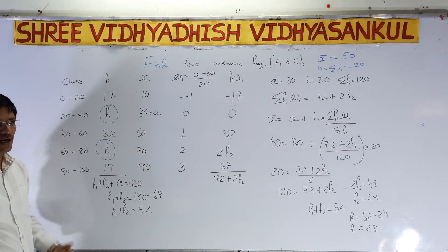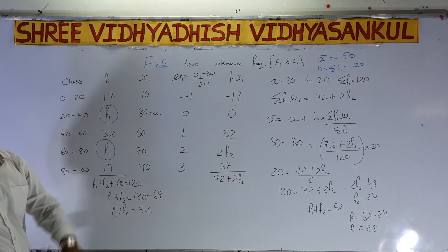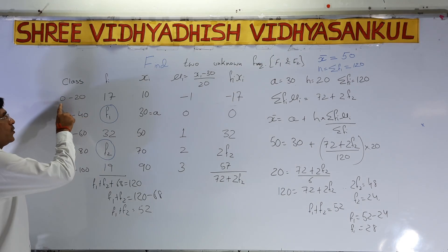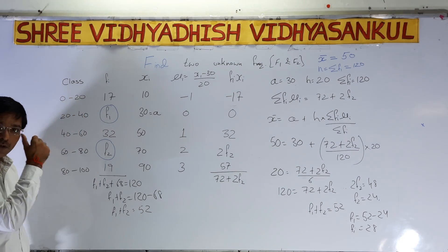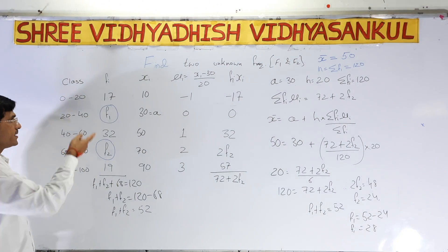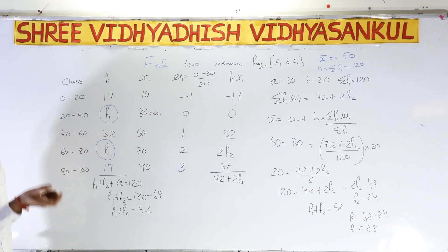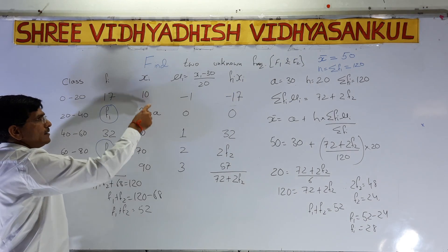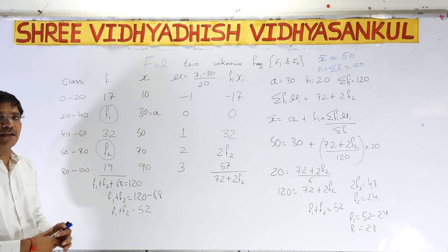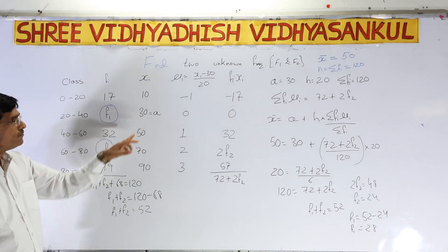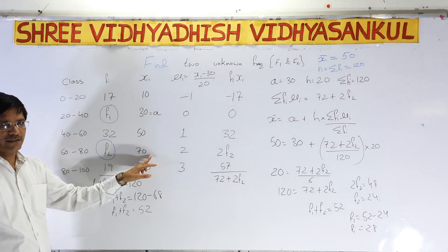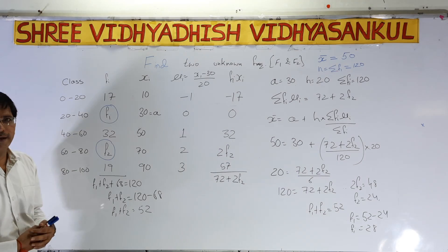We have to find xi, the midpoints. For class 10–20: (10+20)/2 = 15. For 20–40: (20+40)/2 = 30. Then I check the difference: from 15 to 30 is 20, so I keep adding 20. Next midpoints are 50, 70, and 90.